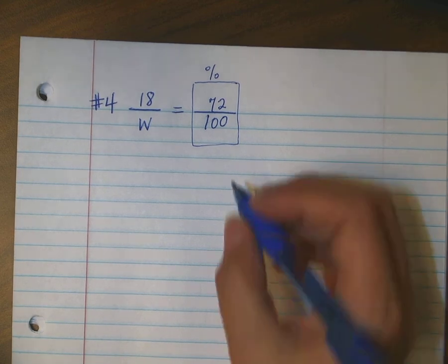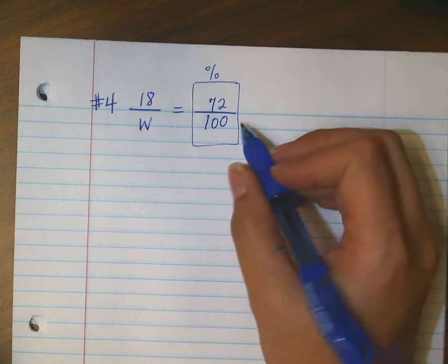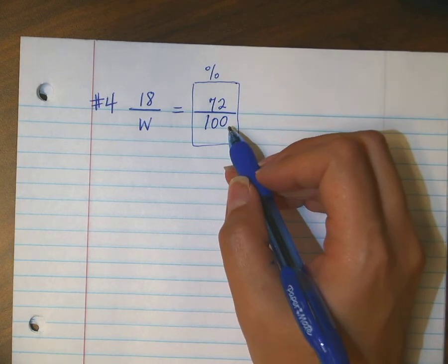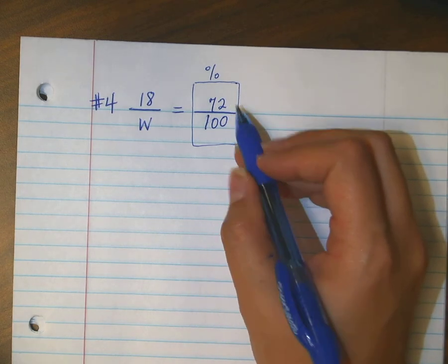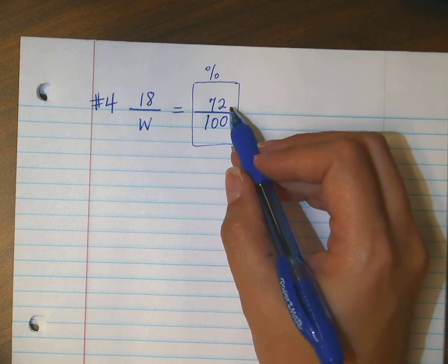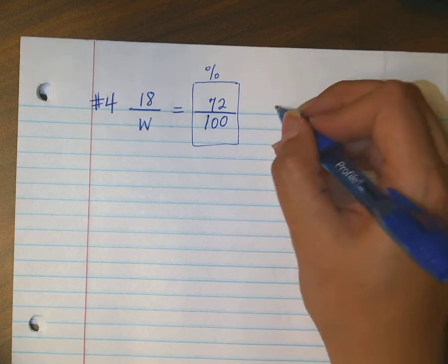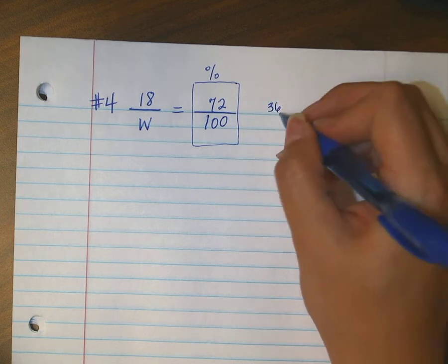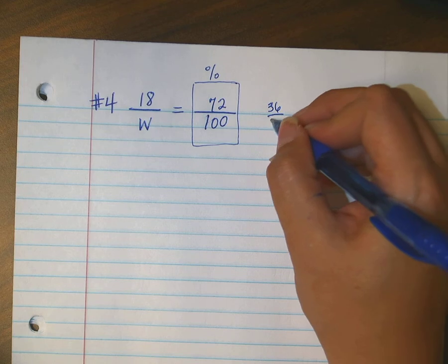Question? We might be able to, let's look. 72 and 100, they're both even which means I can simplify by 2 at least, right? What's half of 72? 36. Okay, 36 and that would be 50.